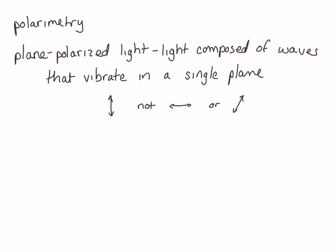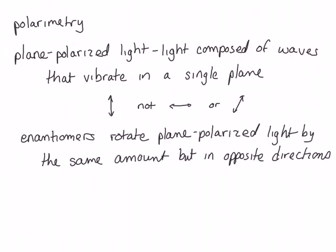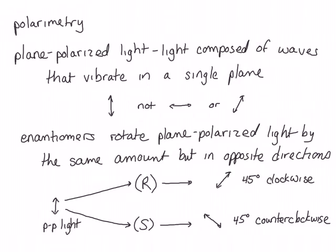Two enantiomers will rotate plane-polarized light by the same amount but in opposite directions. So if we have a pair of enantiomers, 1R, 1S, and we shine plane-polarized light on samples of each of these enantiomers, each enantiomer will cause that plane-polarized light to rotate by the same amount but in exactly opposite directions.